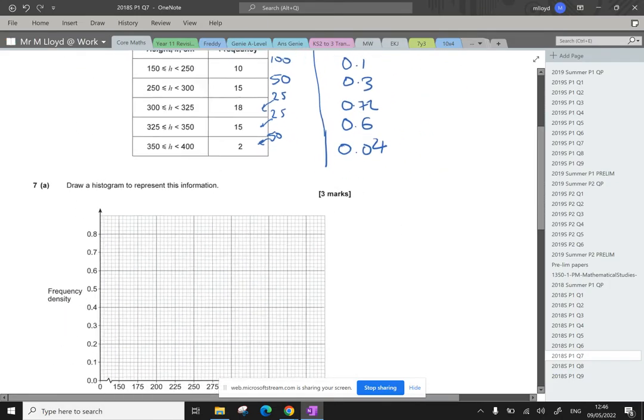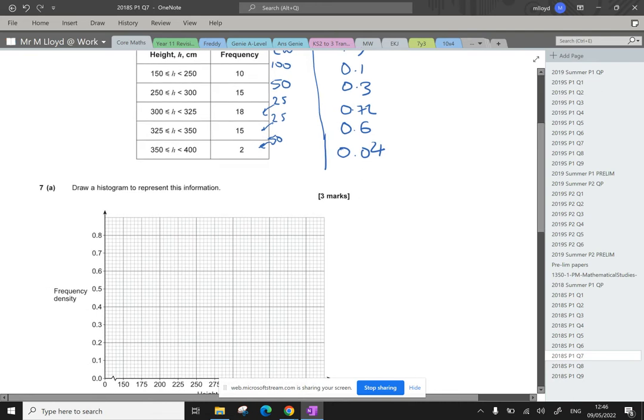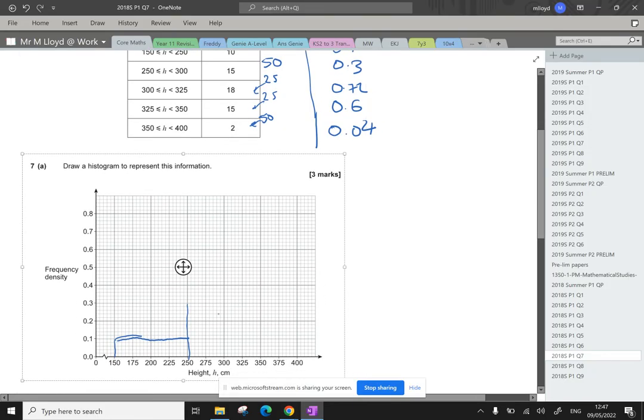So we've got a nice big class width here of 100, starting at 150. I've got to be so careful. This is so hard on the surface. I've gone up too far. There we go. That one's there. The next one goes to 0.3. I'm just going to draw the line there already. Goes across the 300. Yeah, that looks fine. Scroll up a little bit now. Down, and then across.